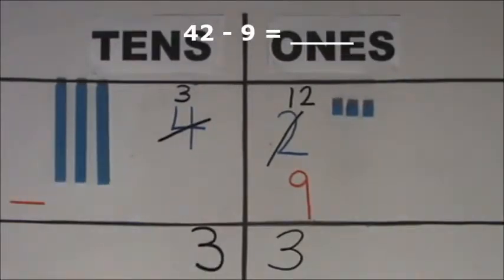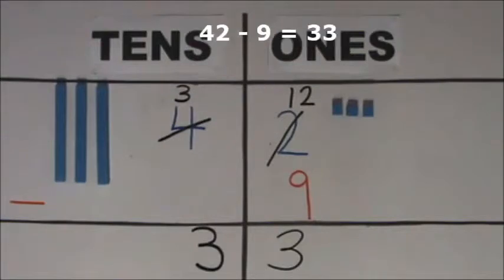When we subtract 9 from 42, we get 33. 42 minus 9 equals 33.